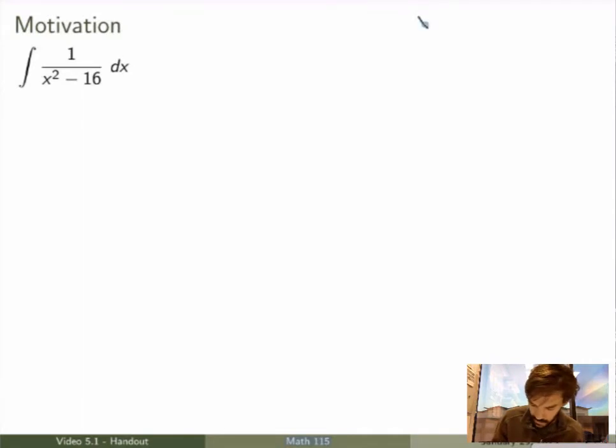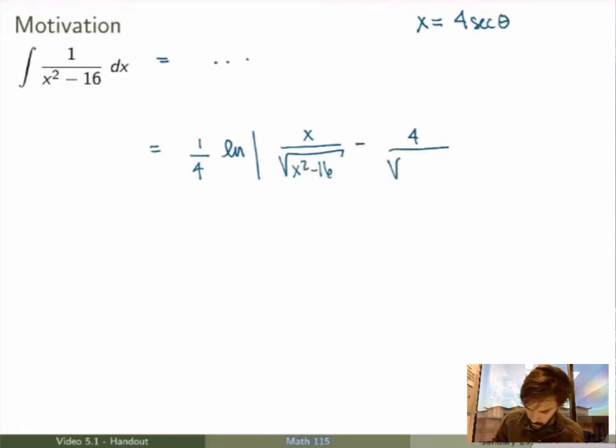So we're going to define in this case an inverse substitution x equals 4 secant theta, and then we just work through all the details of the trig substitution, and if you do everything correctly you should end up with the result 1 over 4 times the log of x over square root of x squared minus 16 minus 4 over square root of x squared minus 16 plus the constant of integration.